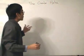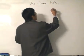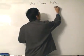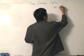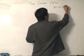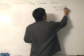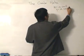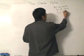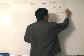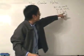The circular helix is defined by the parameters: x equals a times cos(t), y equals a times sin(t), and z equals b·t — written parametrically in terms of parameter t.